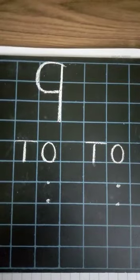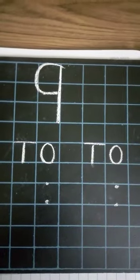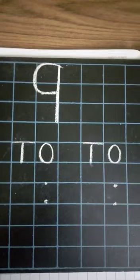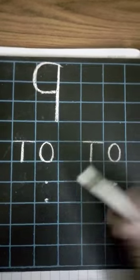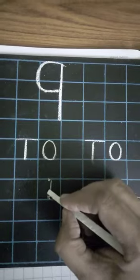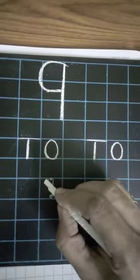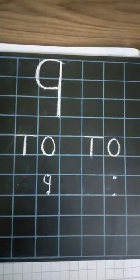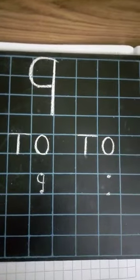Today I will teach you how to write number 9. For that, mom has given you two dots. You have to make one standing line and one curve. See, number 9 is ready. It's very easy.